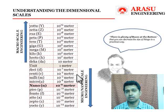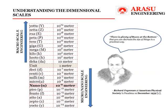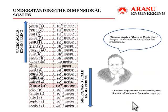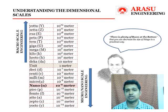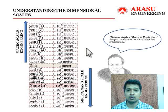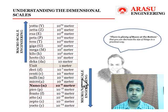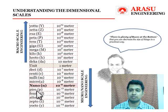The concept of working at the lower order dimensional scale was first motivated by scientist Richard Feynman in the year 1959. During his talk at the American Physical Society in Pasadena, he made a clue that there is plenty of room at the bottom — that one can reduce the size of things in a practical way. Since then, many researchers have started working at these lower order dimensional scales. It has taken too many years for us to develop tools that allowed us to work at this dimensional scale.